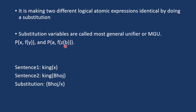So substitution variables are called most general unifier or MGU. Let's see an example. Two sentences are given. Sentence one is king(x) and sentence two is king(Bhoj). So here for unification, what substitution is possible? We can replace this x by Bhoj. So this is our substitution.